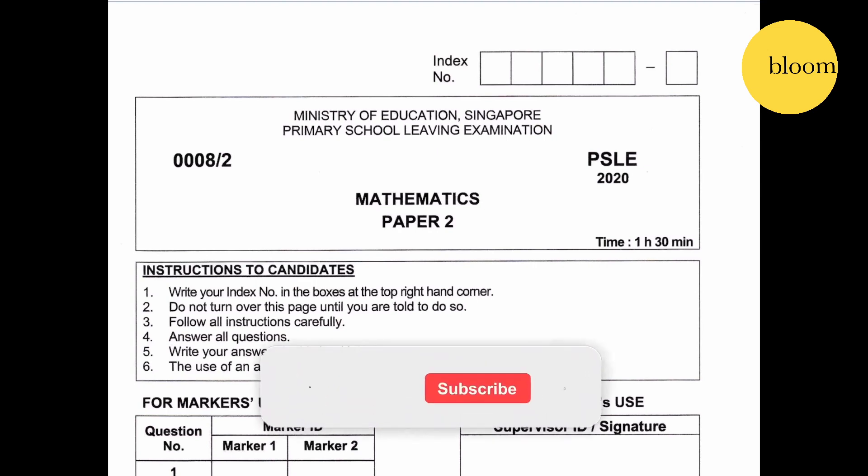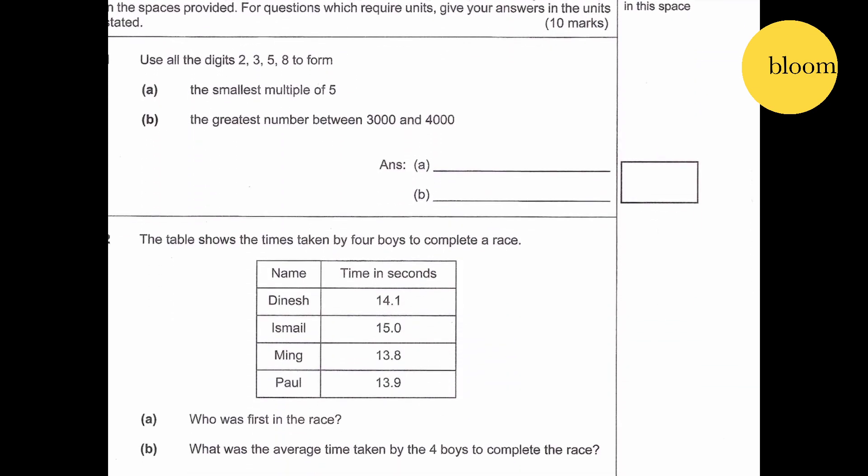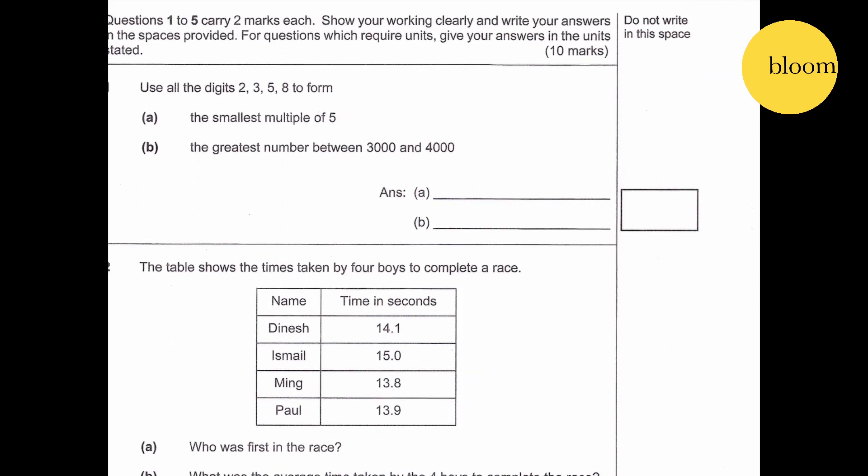PSLE 2020 Mathematics Paper 2. Time is 1 hour 30 minutes. There are 17 questions. Question 1: Use all the digits 2, 3, 5, 8 to form the smallest multiple of 5.